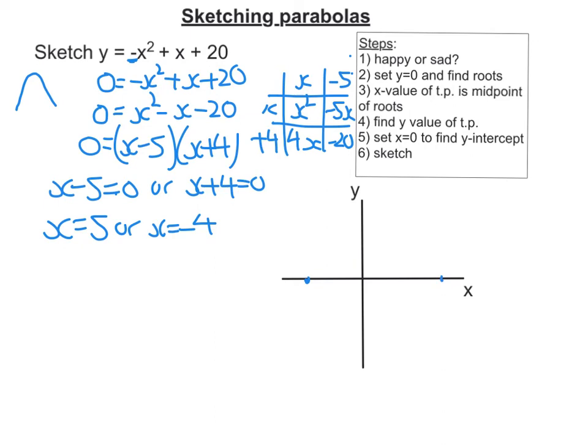Right, next is find the x value of the turning point, and that is the midpoint of the roots. So halfway between 5 and negative 4 is 0.5. Okay, that's halfway.